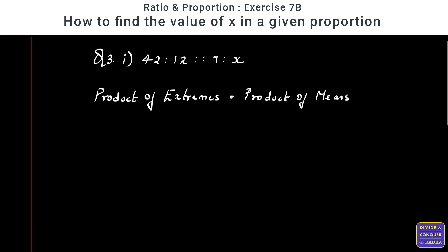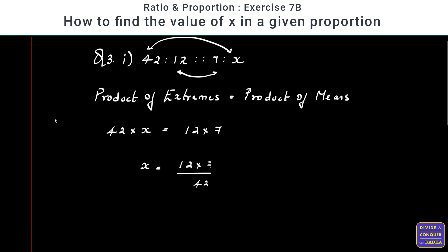We're going to use the same concept here to find the value of x. I always prefer to have x on the left-hand side to avoid confusion. x is in the fourth place — the extreme position — so I'll take product of extremes and equate it to product of means: 42 into x is equal to 12 into 7, where 12 and 7 are the means and 42 and x are the extremes. So x equals 12 into 7 divided by 42.